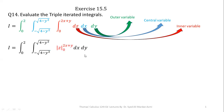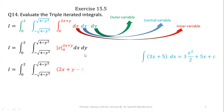Integration of dz is simply z, evaluated from the limit 0 to 2x plus y. In the next step we apply the fundamental theorem of calculus — upper limit minus lower limit. So after applying it, we have 2x plus y minus 0, which completes the integration with respect to z, our most inner variable.